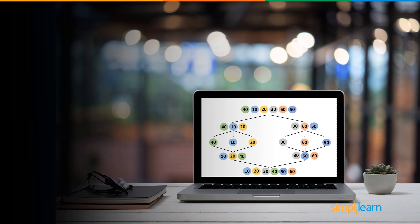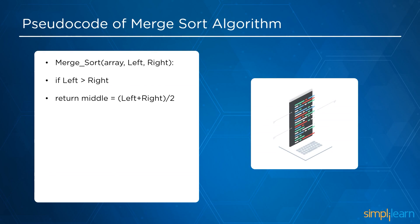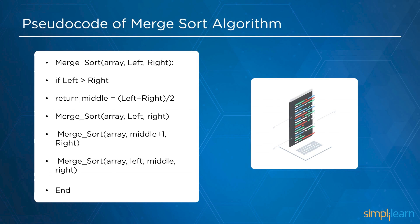After understanding the working procedure of merge sort, we will now see its pseudocode. We have a function called merge sort with parameters: an array named 'array' and two variables named 'left' and 'right'. If the number of elements on the left is greater than those on the right, we calculate the middle using the formula (left + right) / 2. Merge sort is then called recursively with the array, left and middle, as well as with array, middle plus 1 and right.